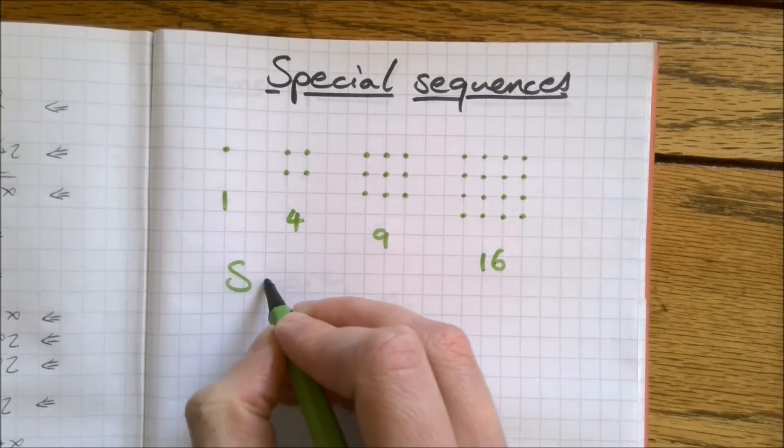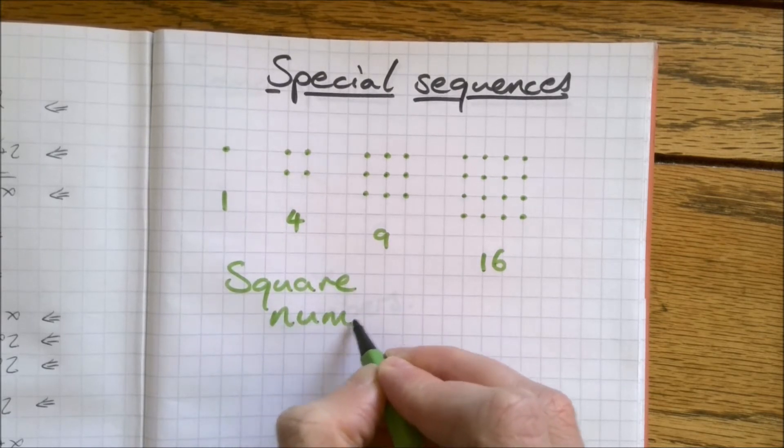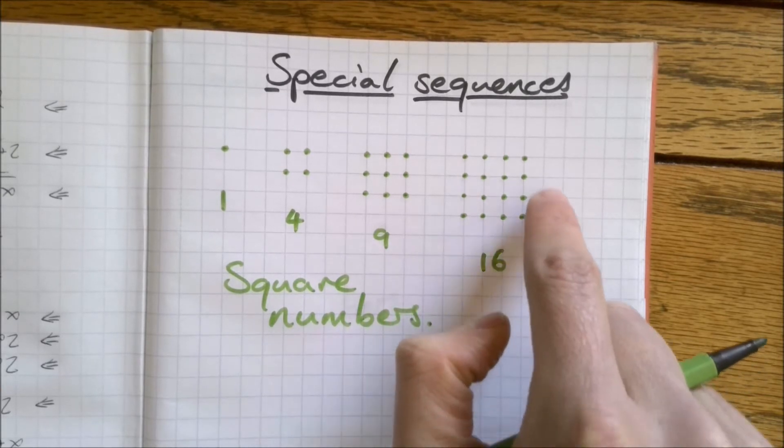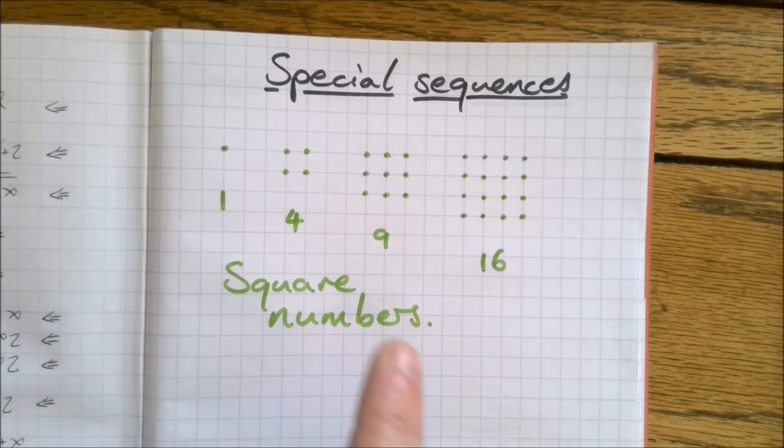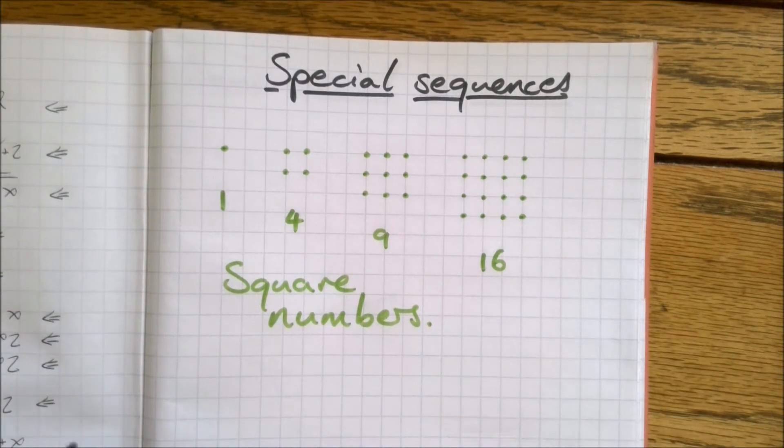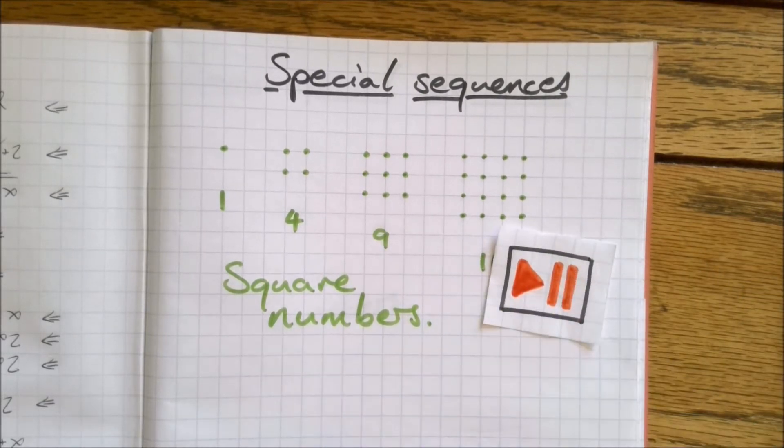These numbers are the square numbers, called so because we can draw them in squares. Take a moment to pause the video and see how many square numbers you can write down. See how far you can get carrying this on, say for a minute. How many can you write down in a minute?